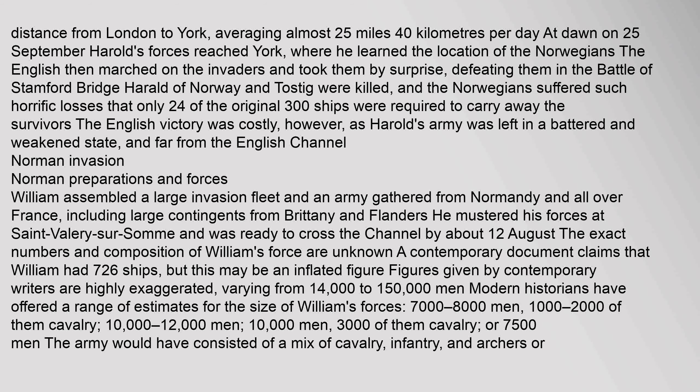William assembled a large invasion fleet and an army gathered from Normandy and all over France, including large contingents from Brittany and Flanders. He mustered his forces at St. Valéry-sur-Somme and was ready to cross the Channel by about 12 August. The exact numbers and composition of William's force are unknown. A contemporary document claims that William had 726 ships, but this may be an inflated figure. Figures given by contemporary writers are highly exaggerated, varying from 14,000 to 150,000 men. Modern historians have offered a range of estimates: 7,000–8,000 men with 1,000–2,000 cavalry, or up to 10,000–12,000 men.